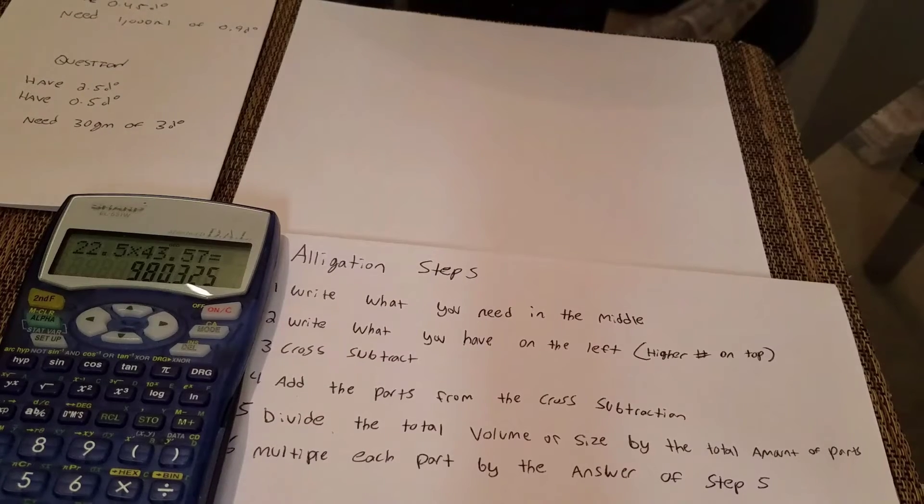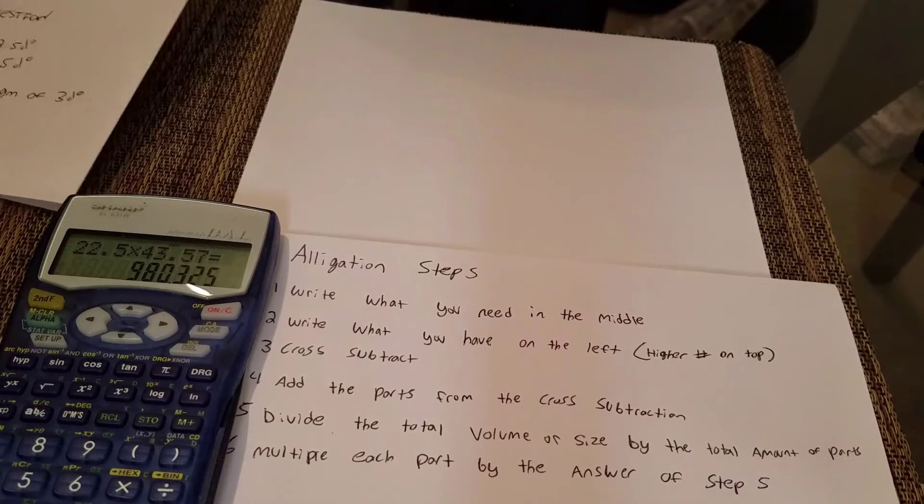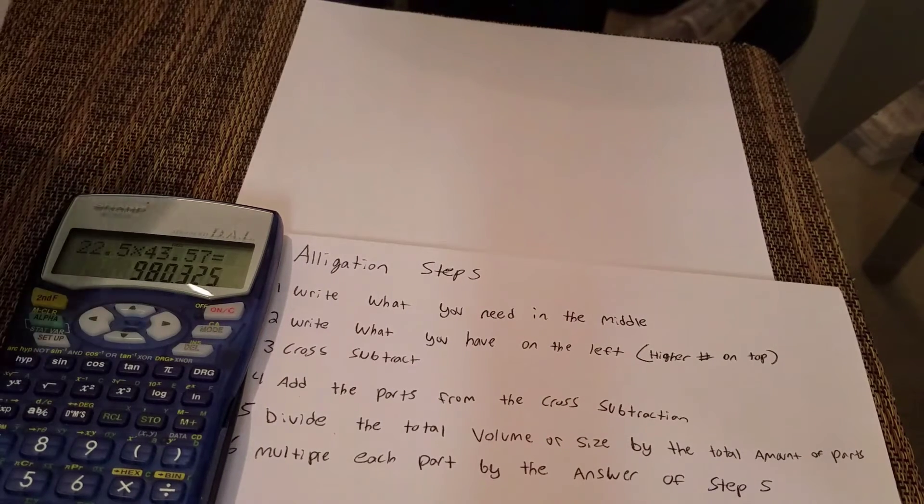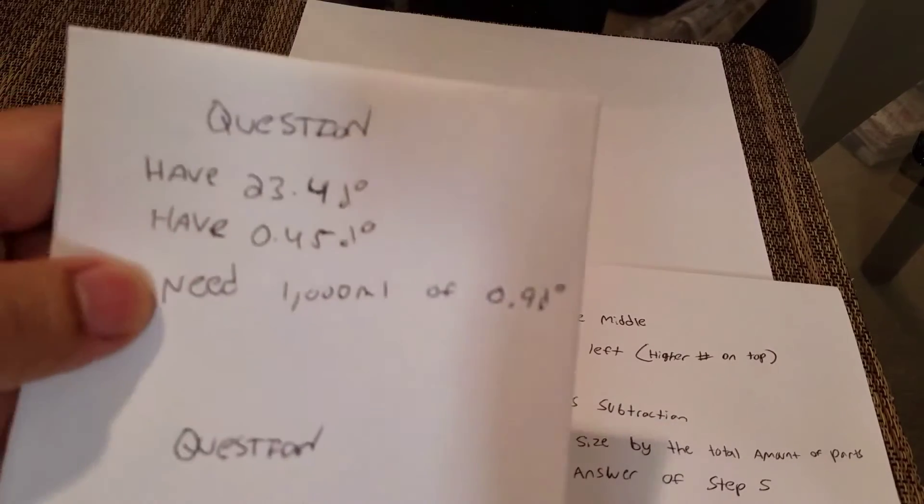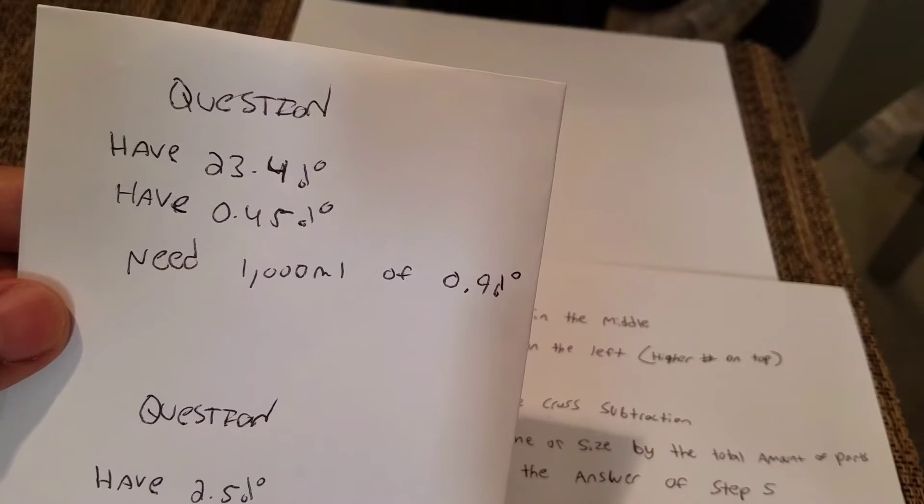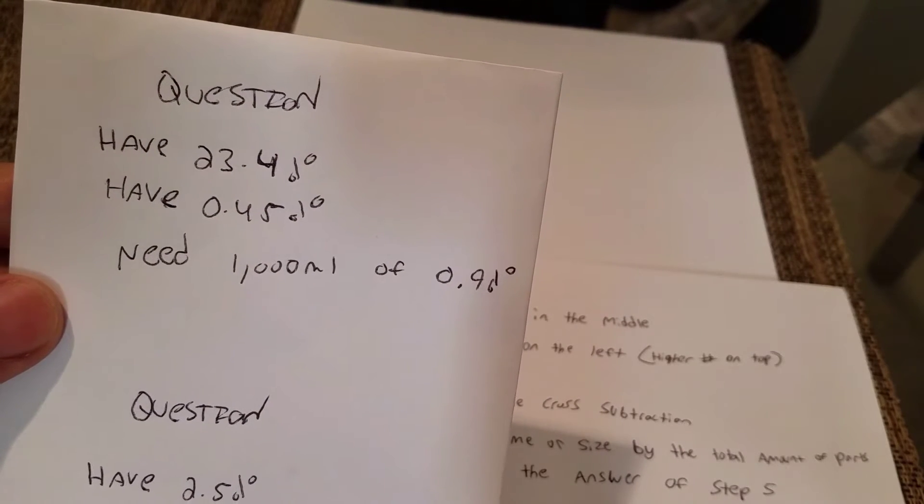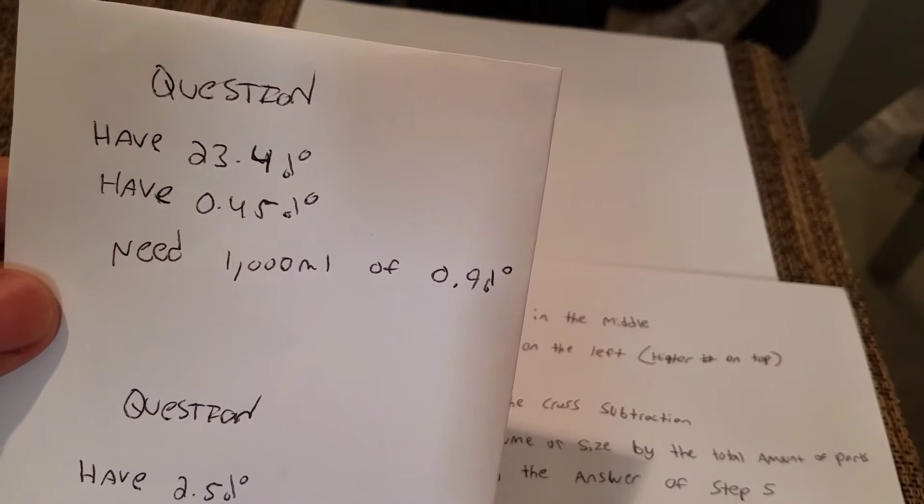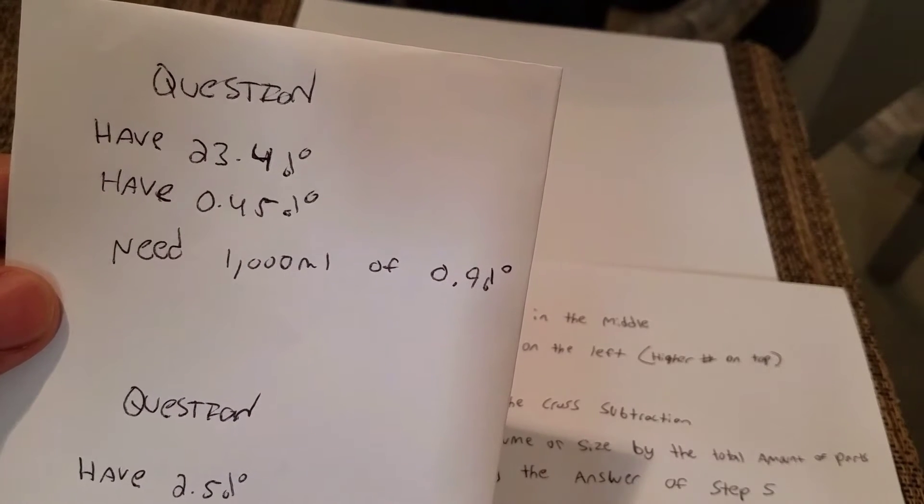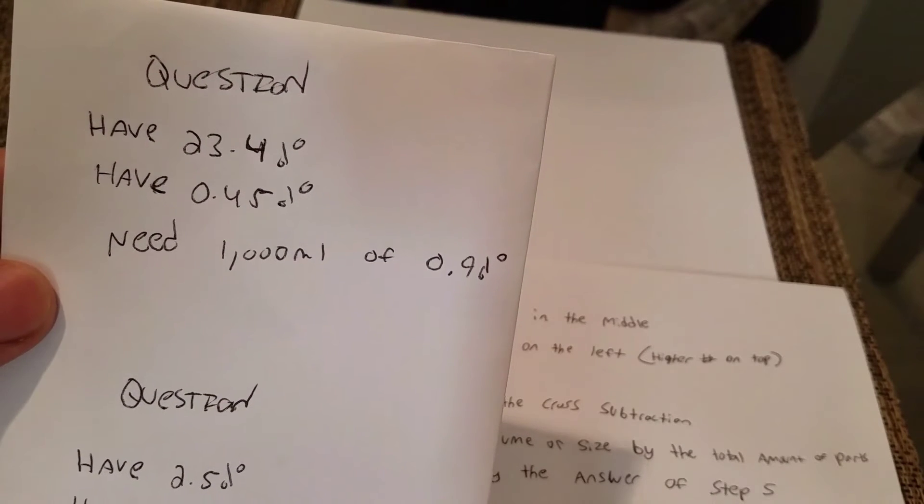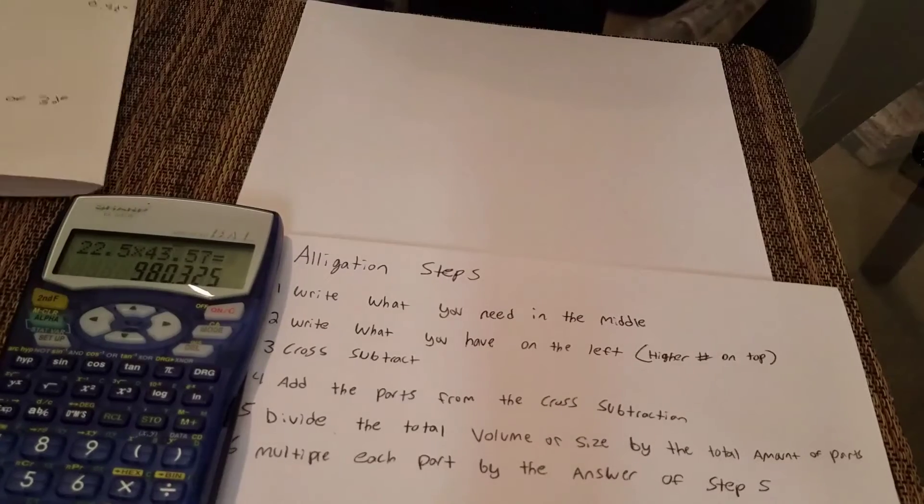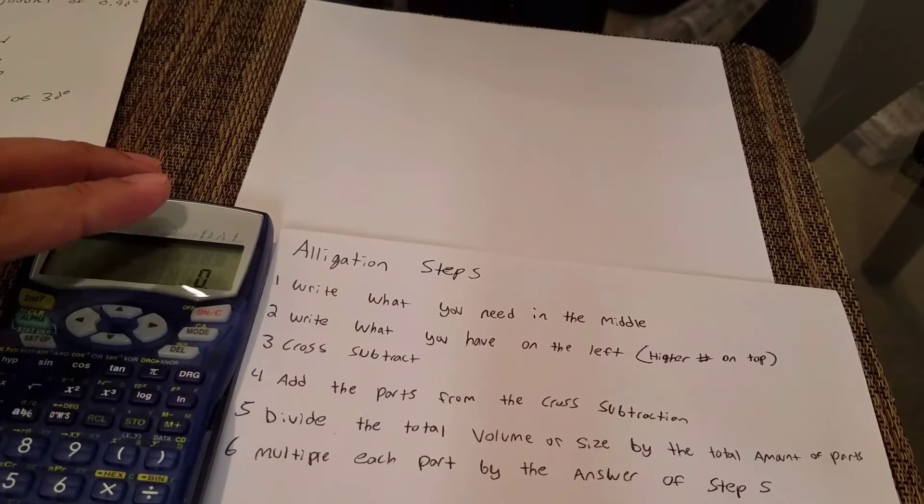I'm ready to do the first problem with you guys. Anytime you're doing alligations, always think of this: you only need four bits of information. A lot of times on a test they might give you different numbers or word things differently to try to throw you off, so just focus on the four numbers. Question one: I have concentrated saline 23.4%, I have a half saline bag, and I need to make 1000 mLs of normal saline. Those are the four bits of information - three concentrations, two of them are what you have, the other one is what you desire, and then the amount that you want to make.